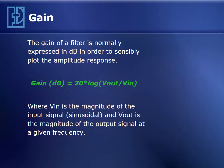Gain is expressed normally in decibels or dB in order to sensibly plot the very wide range of gain on a filter on a compressed logarithmic scale. Gain in decibels equals 20 times log to the base 10 of the magnitude of the sinusoid at the filter output given a magnitude applied at the filter input. So 20 times log base 10 of Vout over Vin.